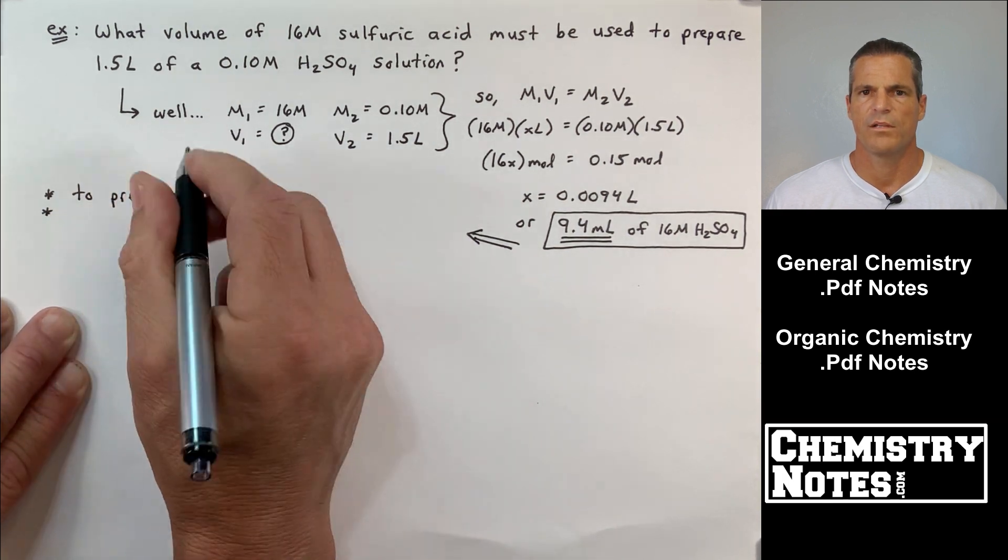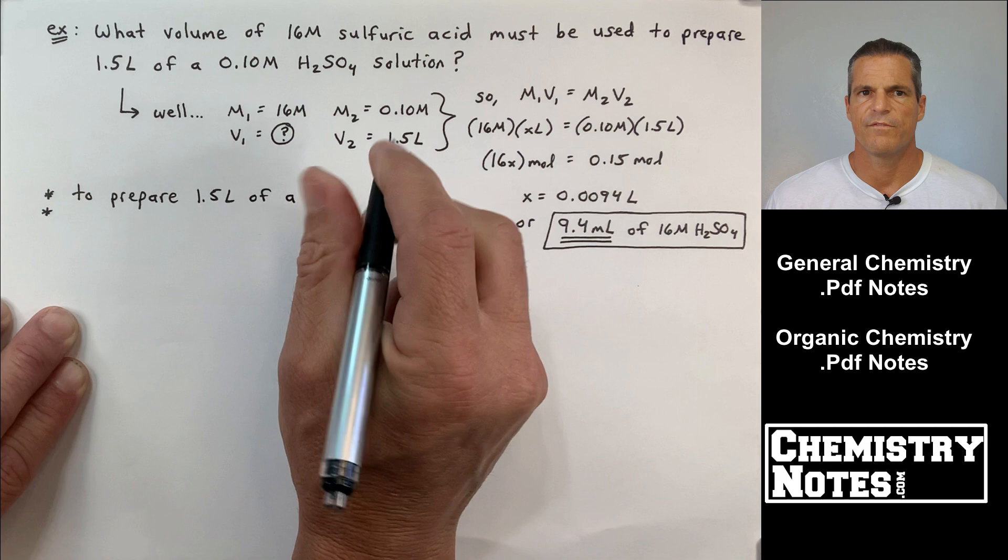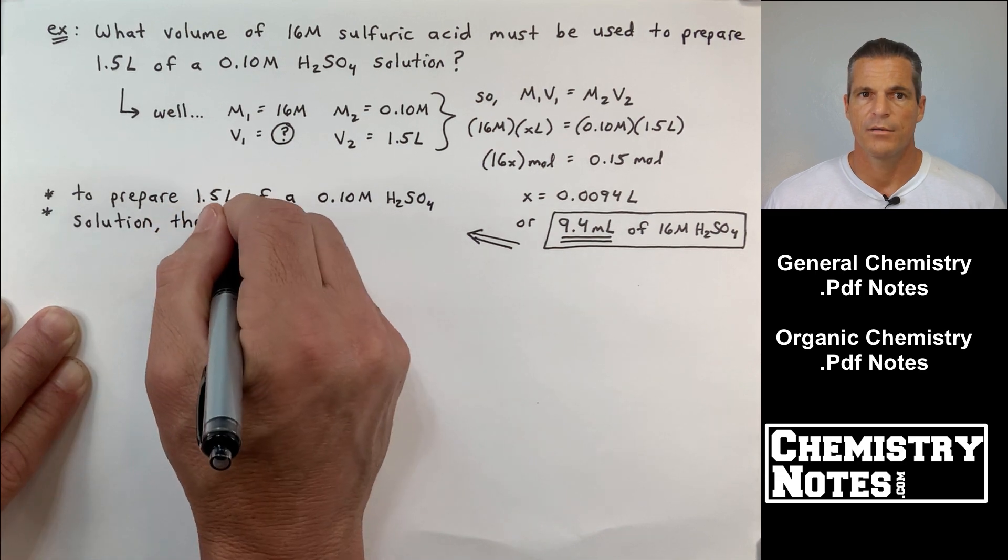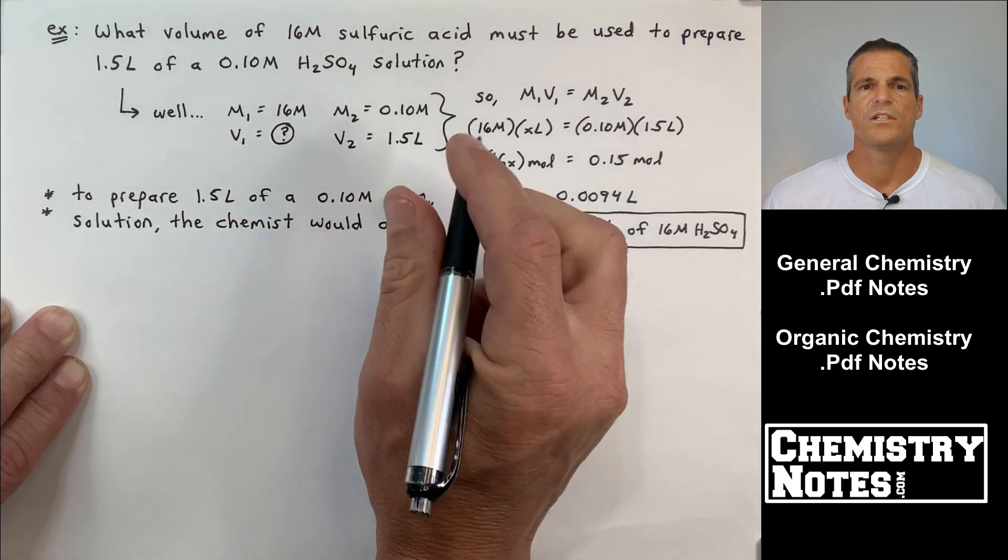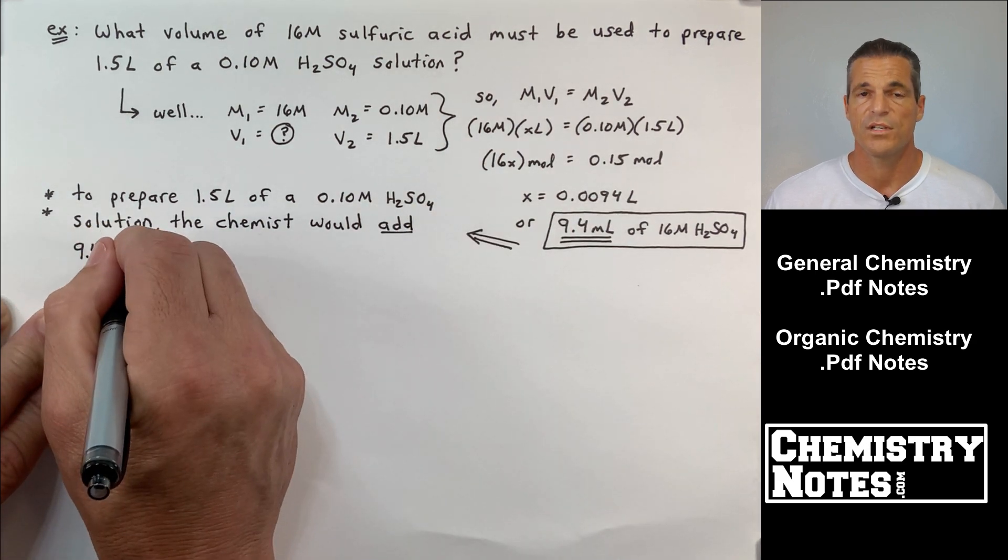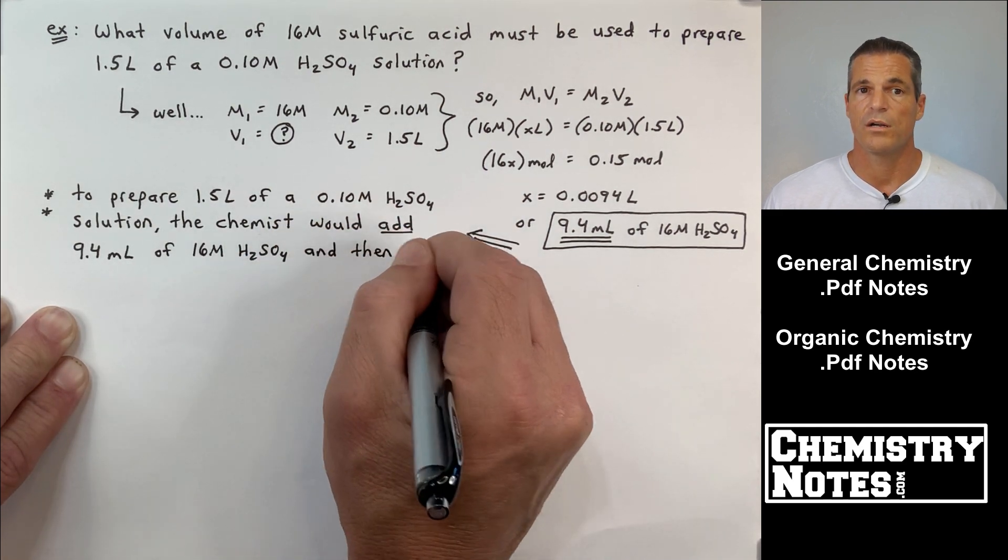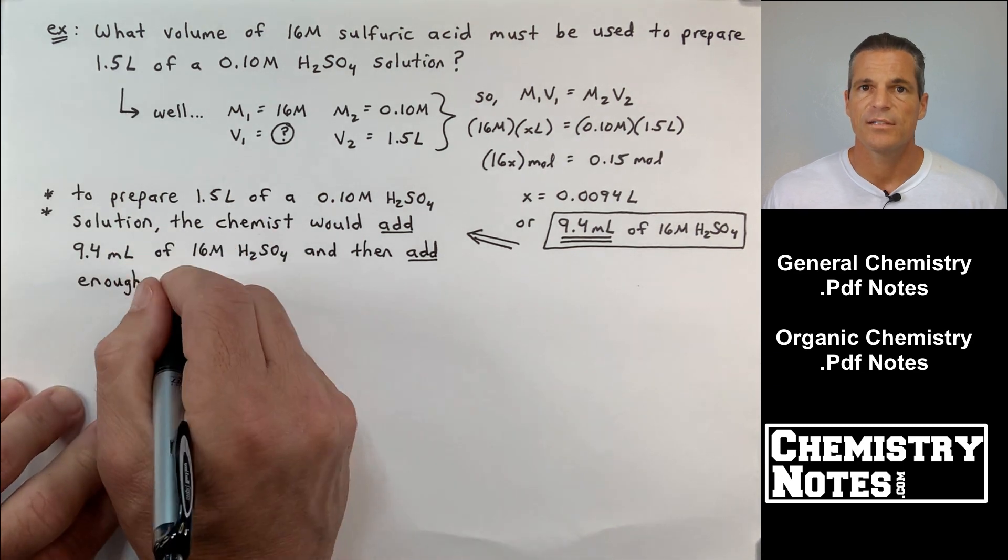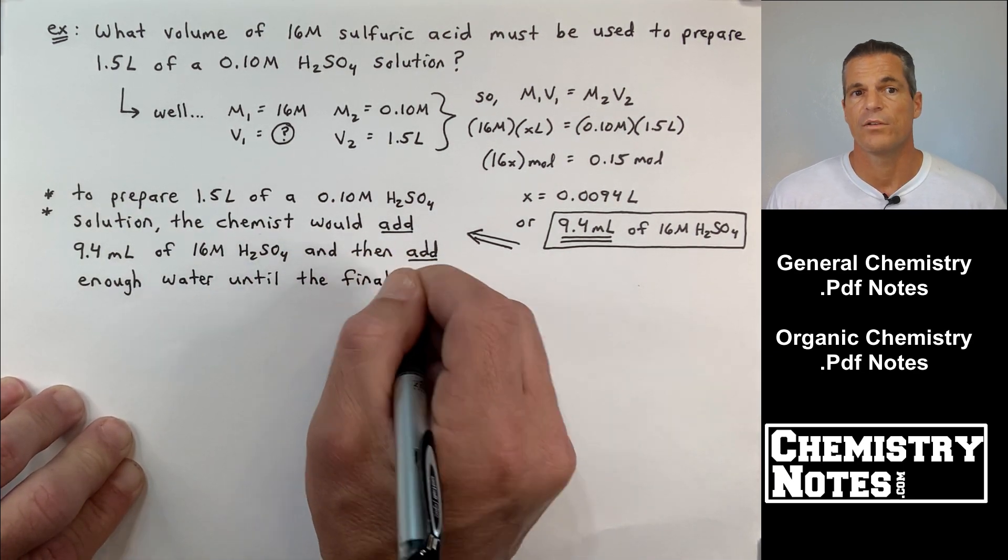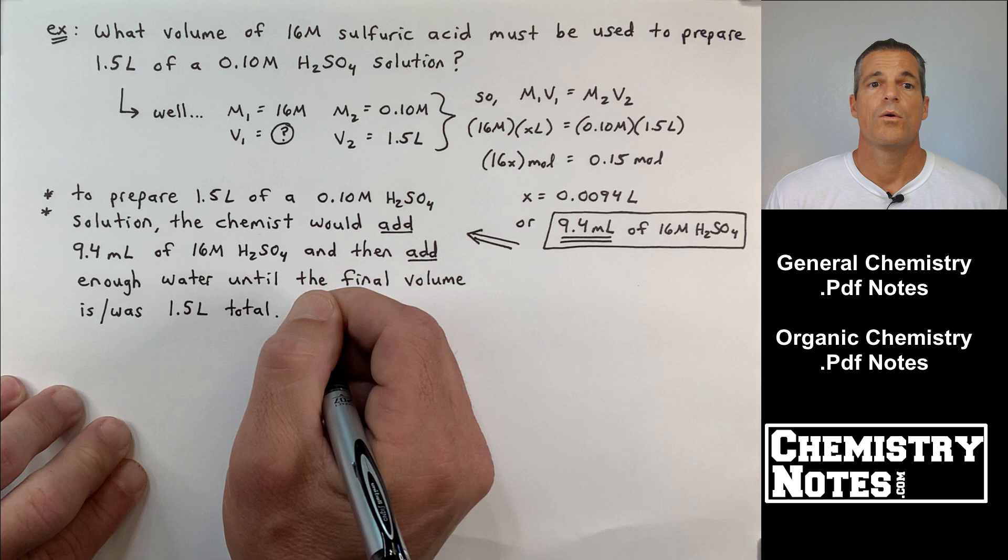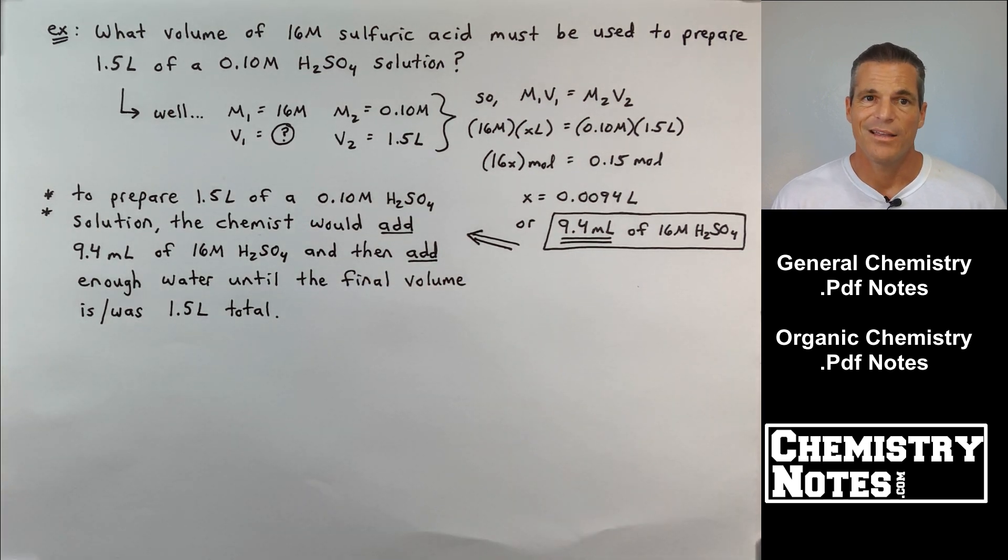So what does that mean? 9.4 milliliters says it wanted us to make 1.5 liters. That doesn't mean we've done this problem wrong. It just means the following. To prepare 1.5 liters of a 0.10 molar H2SO4 solution, the chemist would use that 9.4 milliliters of 16 molar H2SO4 and then dilute it to a total volume or a final volume of 1.5 liters. So you're going to have 1.5 liters total. Of that 1.5 liters, only 9.4 milliliters are the 16 molar H2SO4.